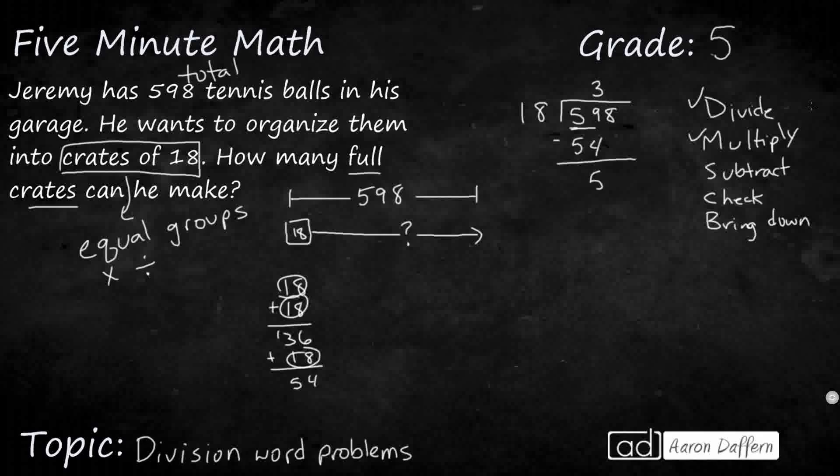3 times 18 is going to be 54. Subtract, that's going to be 5, check. Is that remainder 5 smaller than the divisor 18? Yes, it is. It has to be. Then we bring down, we only need to bring down one more digit and do it again. How many times can 18 go into 58? Well, 18 times 3 is 54. You're not going to get another one out of there. So I'm going to do it all over again.